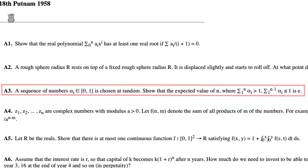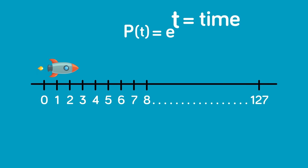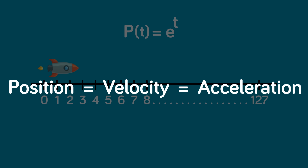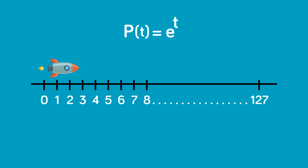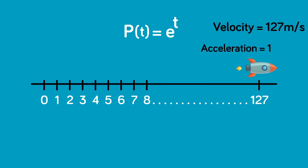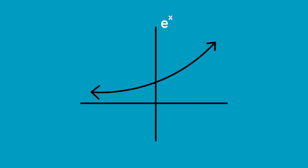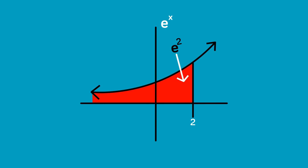The competition problem was to prove that this was the case. E to the x also has a very weird property: its rate of change is always itself. If you were in a hypothetical rocket whose position was modeled by e^t, your position, velocity, acceleration, and so on would always match. When you're at the 127-meter mark, your velocity would be 127 meters per second, your acceleration 127 meters per second squared, and so on. There's also an interesting property finding the area under e^x: the area from negative infinity to any number equals e to that number.